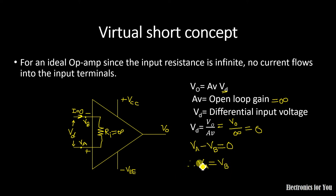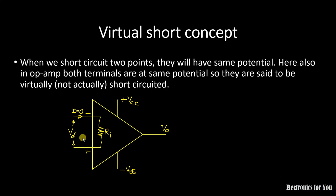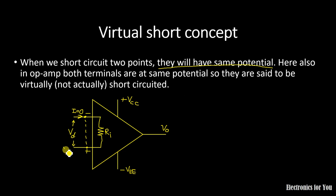Therefore Va equals Vb. By the virtual short concept, Va equals Vb, meaning both voltages are equipotential. When we short-circuit any two terminals, they have the same potential. Here in the op-amp, Va equals Vb means both terminals have the same voltage, but they are not actually short-circuited. Since they are not actually shorted, this is called a virtual short.